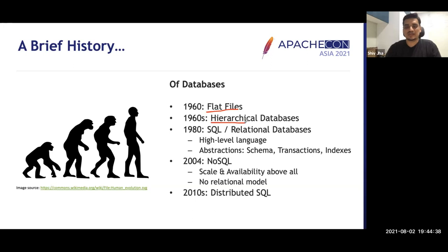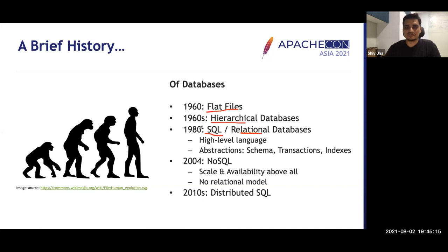Next came hierarchical databases — think of them like a directory structure — where locating data was comparatively easier. The problem was that they only supported one-to-many relationships, not many-to-many. Then relational algebra was developed in academia, giving rise to SQL and relational databases, which have stood the test of time from the 1980s through today, offering SQL semantics, schemas, ACID transactions, and indexes.